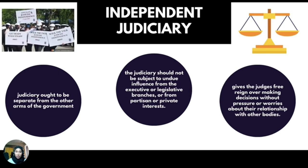The next concept is judicial independence, or independent judiciary. As we know, there are three branches of government: the judiciary, executive, and legislative. This notion provides that the judiciary must be separated from the other arms of government. It gives judges free reign over making decisions without the pressure or worries about their relationship with other bodies, because they are free to make whatever decisions they determine and however they interpret the law. The judiciary should not be subject to undue influence from the executive or legislative branches, or any partisan or private interests. This allows for fairer, more precise and accurate judgment by the judiciary.